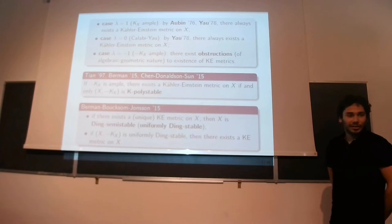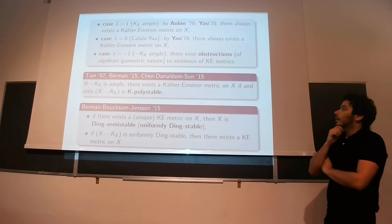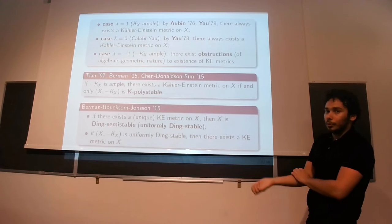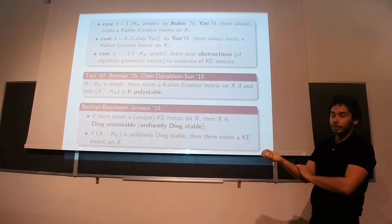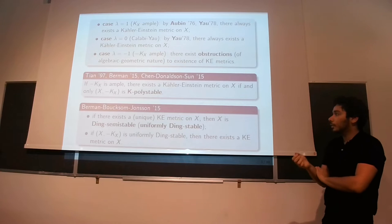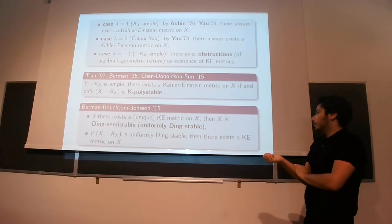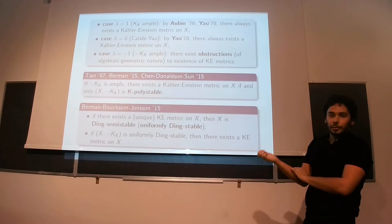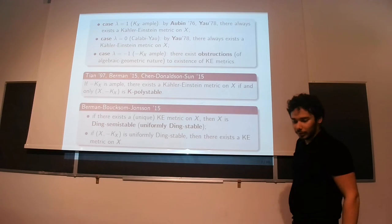So for the classical problem, the conjecture is now known. So there are multiple directions that we can look into next. One thing is to change the polarization, so to not look at minus KX, but to look at any ample line bundle and try to see if there are cscK metrics. Another interesting direction is to weaken the positivity conditions on minus KX.